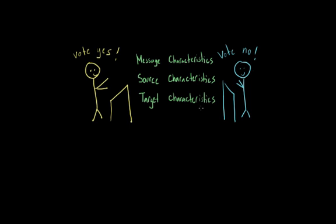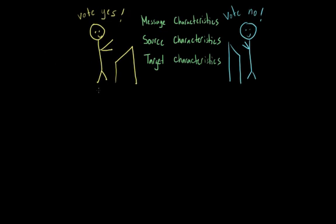So target characteristics include everything about the listener. From how intelligent they are to whether or not they've had enough to eat that day. These are all things that can influence how we attend to and receive a message. And all of these characteristics, but especially the target characteristics, play an important role in the elaboration likelihood model, which is a model that tries to explain how our attitudes are formed and how they can be changed.